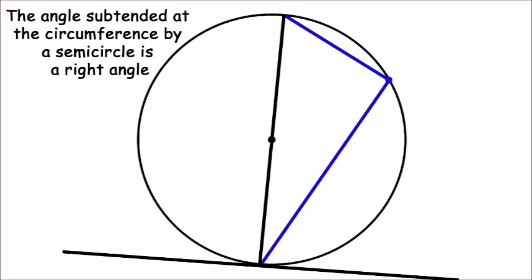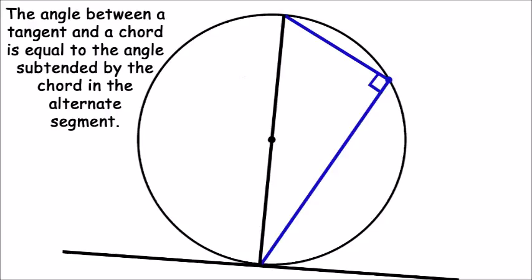We can mark this angle as 90 degrees. If we now use a circle theorem that states that the angle between a tangent and a chord is equal to the angle subtended by the chord in the alternate segment, we can mark the angle between the tangent and our radius as 90 degrees.